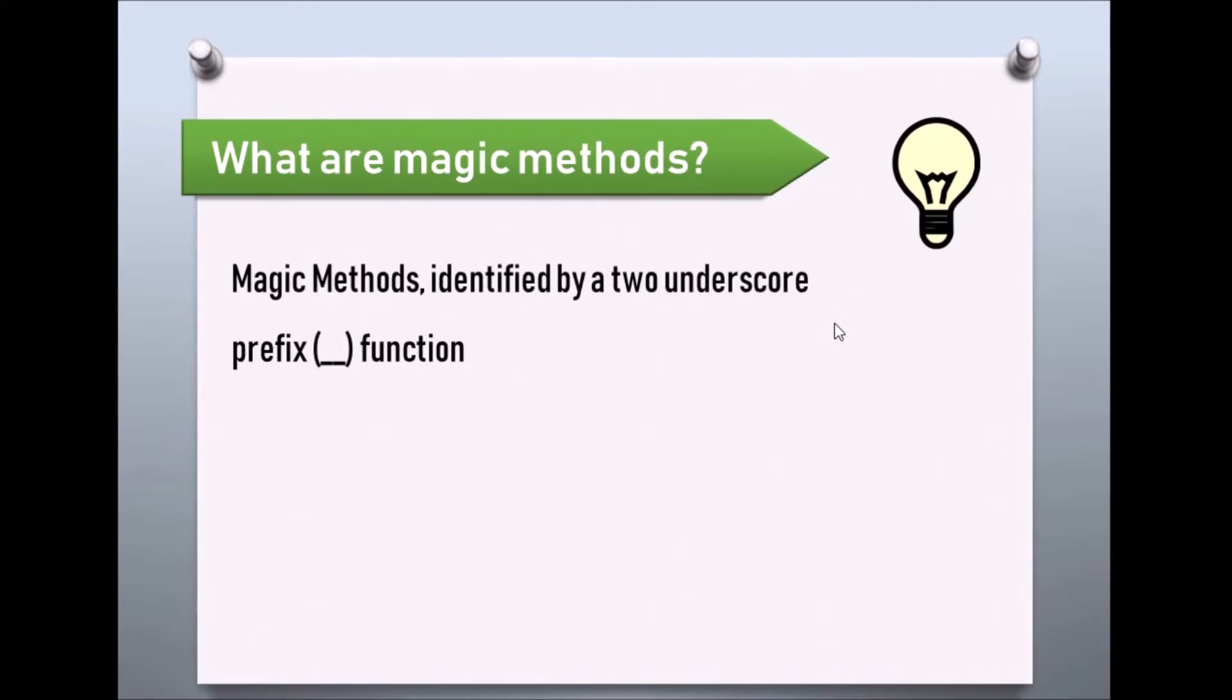In this object-oriented programming series, we have already covered a magic method called construct. The construct function has a double underscore prefix, which identifies it as a magic method in PHP.